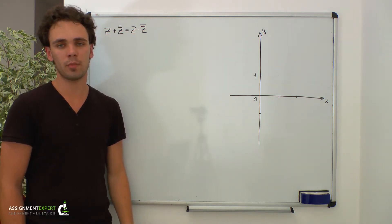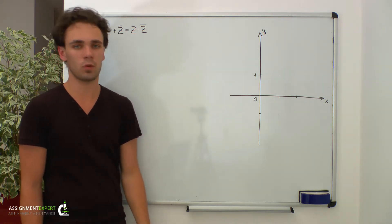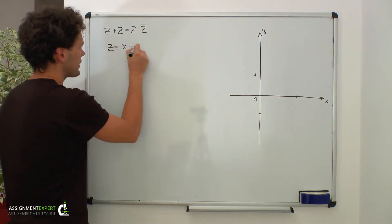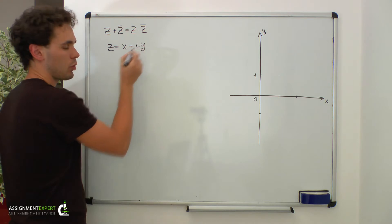Recall that in general, an arbitrary complex number z can be represented as follows: z equals x plus i times y, where x and y are real numbers.